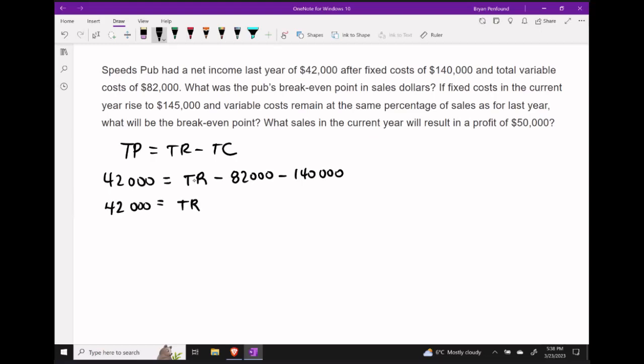This means that altogether our costs were $222,000. And adding those costs back to the net income will tell us that in this particular case, we had a total revenue of $264,000.